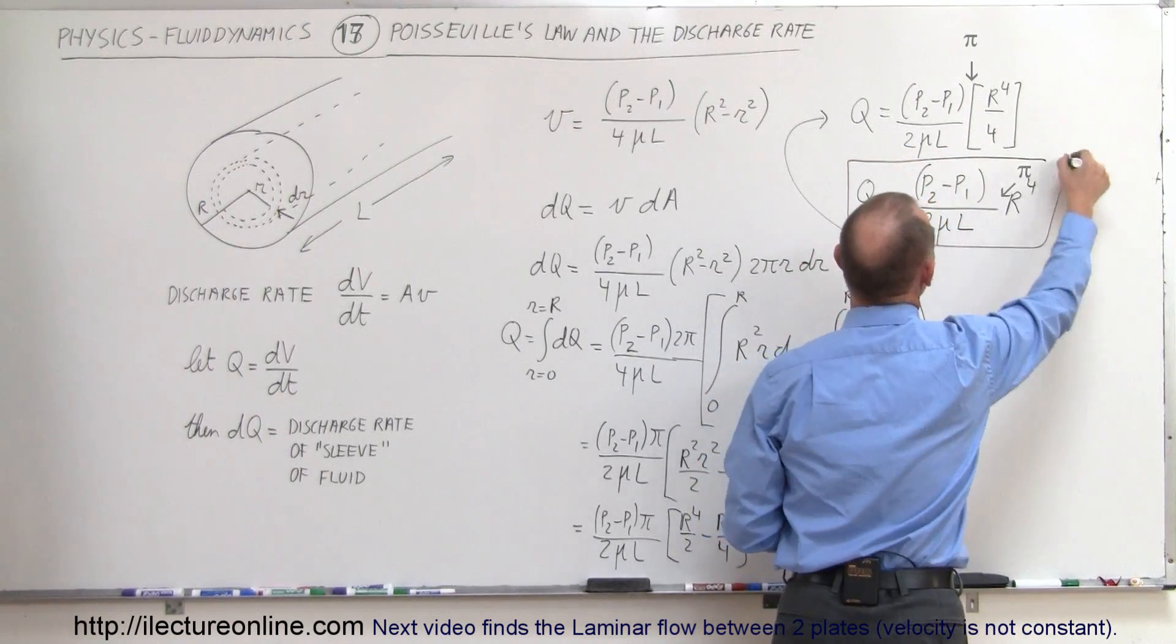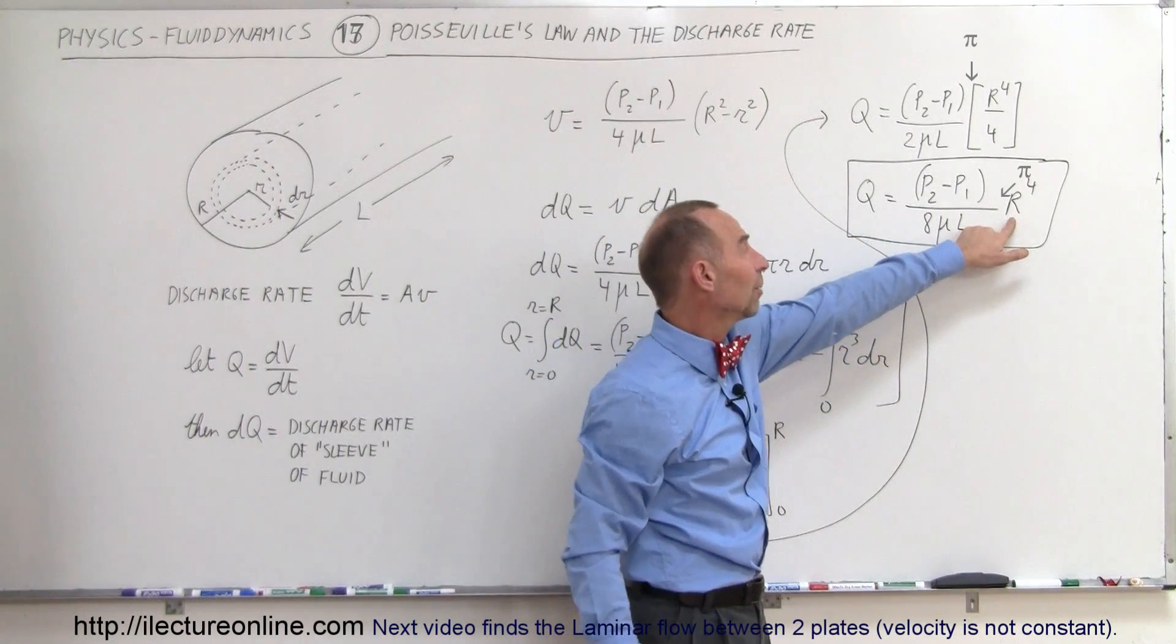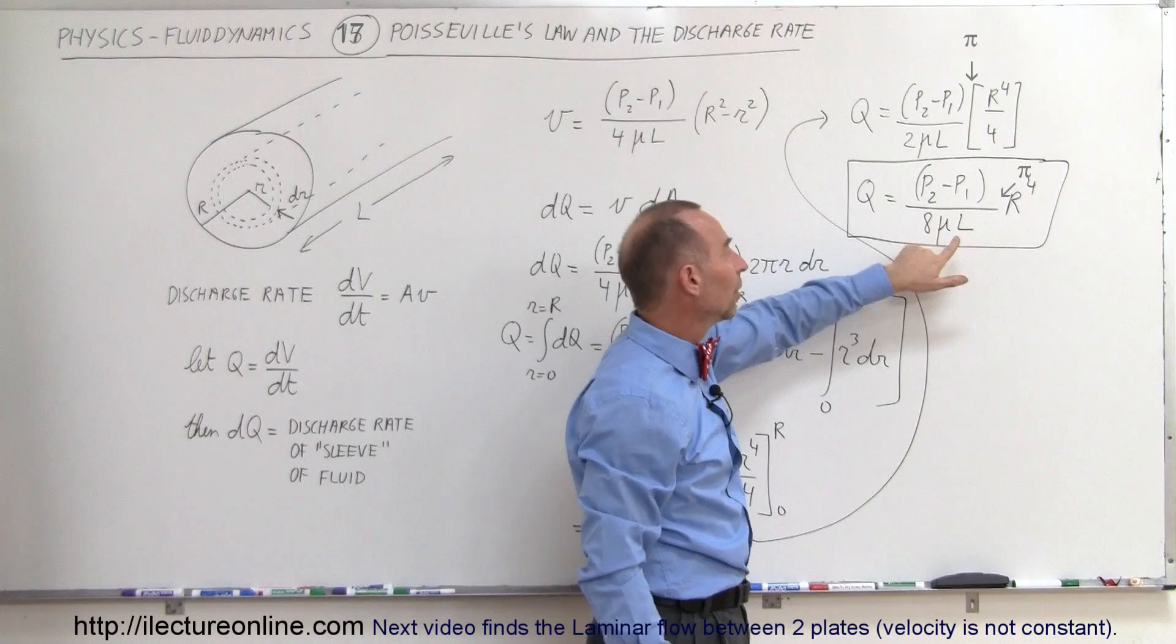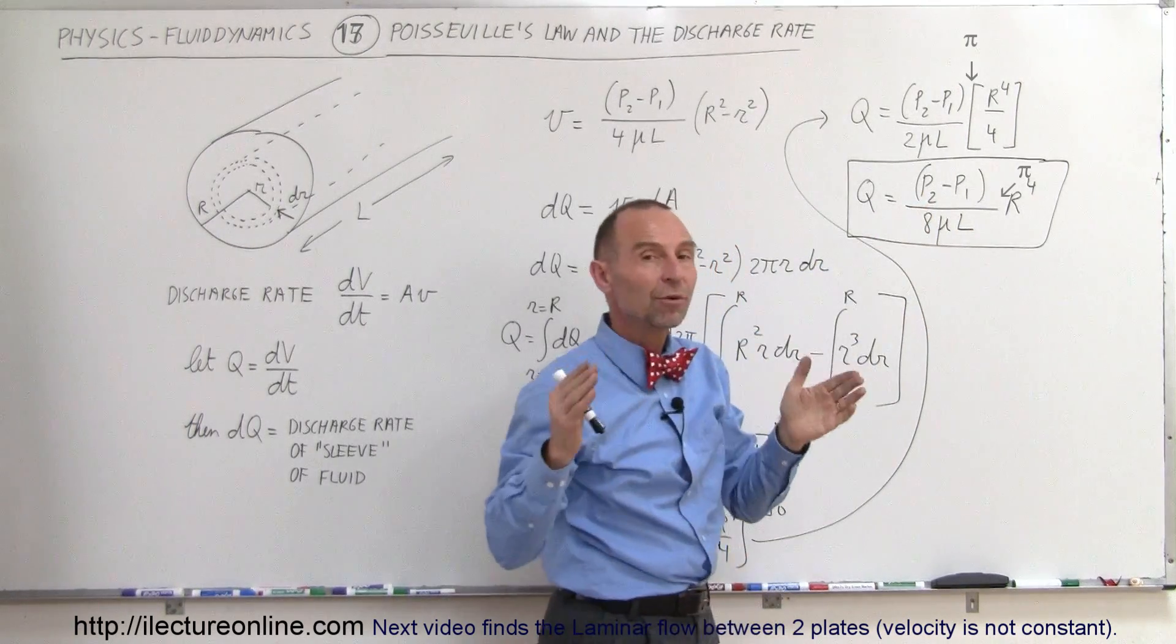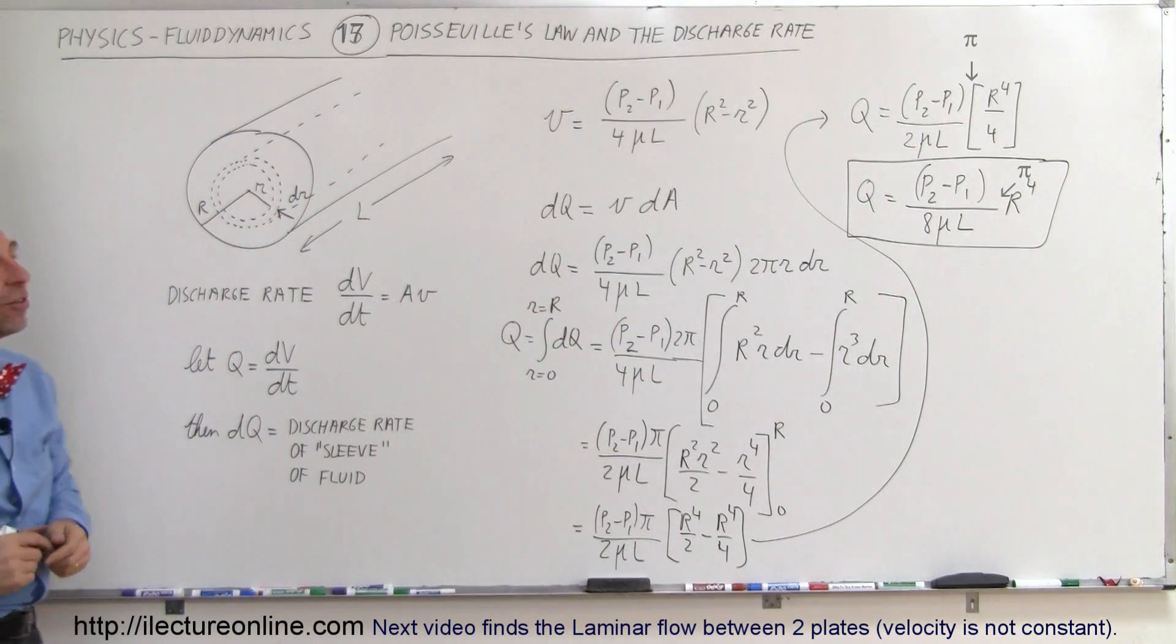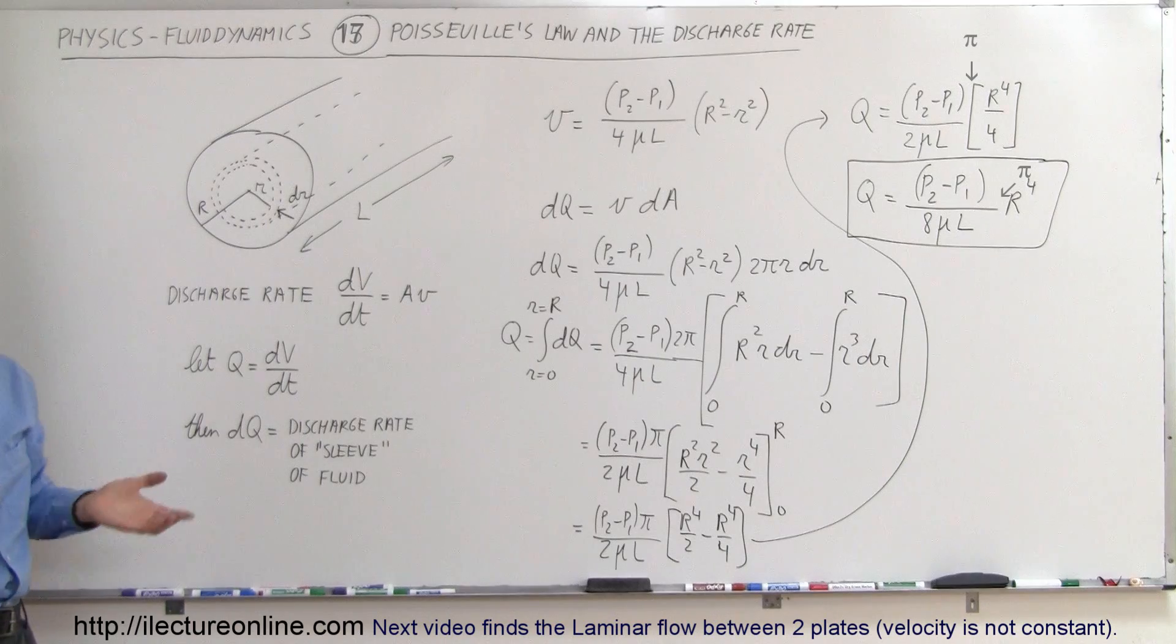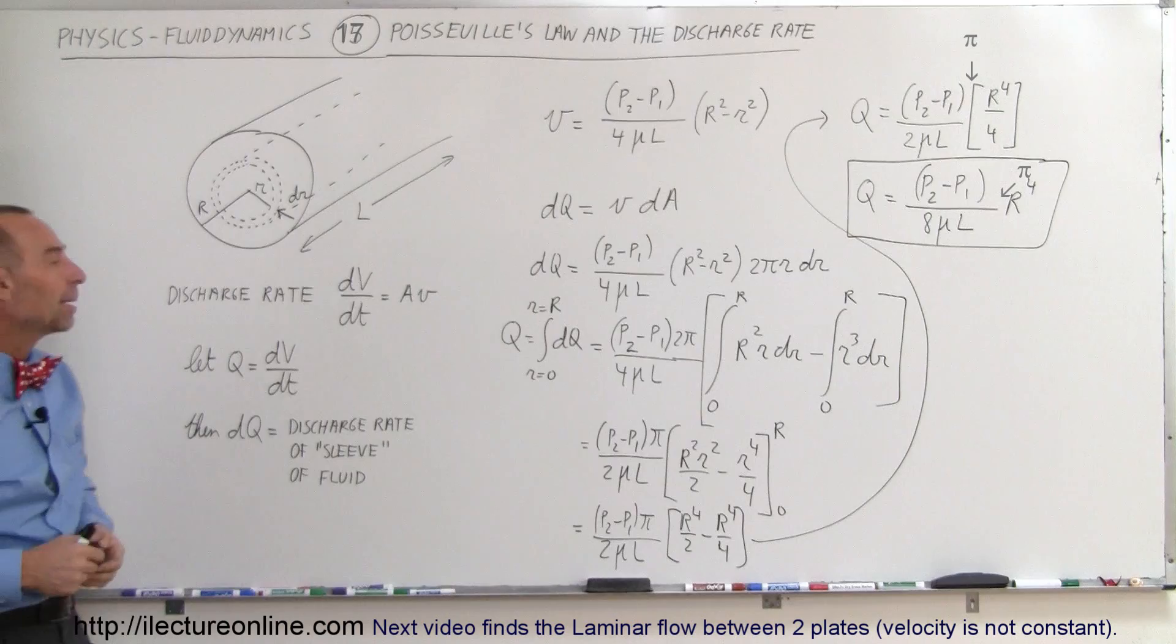And that's the amount of fluid that will flow through the pipe, depending upon the radius of the pipe, the length of the pipe, the coefficient of viscosity of the fluid in the pipe, and the difference of the pressure between that segment of the pipe. And that's how you find the discharge rate, using Poiseuille's law and integrating over the entire diameter or radius of the pipe.